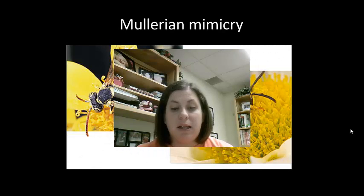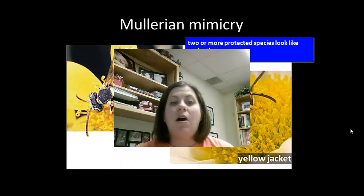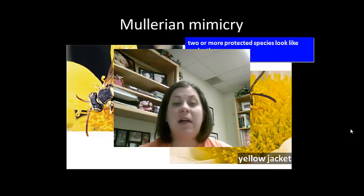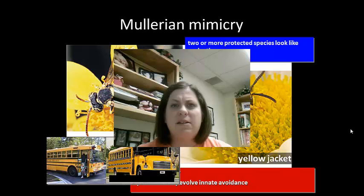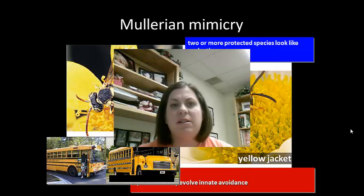Müllerian mimicry is a little different — this is when an animal looks like another and both actually possess the same defense mechanism. Here we have a cuckoo bee and a yellow jacket; they both have the ability to sting you and both have the coloration of black and yellow. It helps strengthen their defense, saying that black and yellow is dangerous. It's kind of like school buses — whether it has a flat end or a normal front, you still know it's a school bus because it's big and yellow. Just like the bee and the yellow jacket, it reinforces that those are dangerous and can sting you.